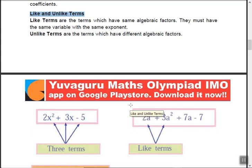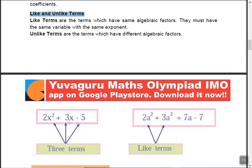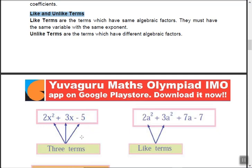Like and unlike terms: like terms have the same variable with the same exponent. For example, in 2x squared plus 3x minus 5, the terms 2x squared and 3x have the same variable x but different exponents (2 and 1), so both conditions are not satisfied — they are not like terms.